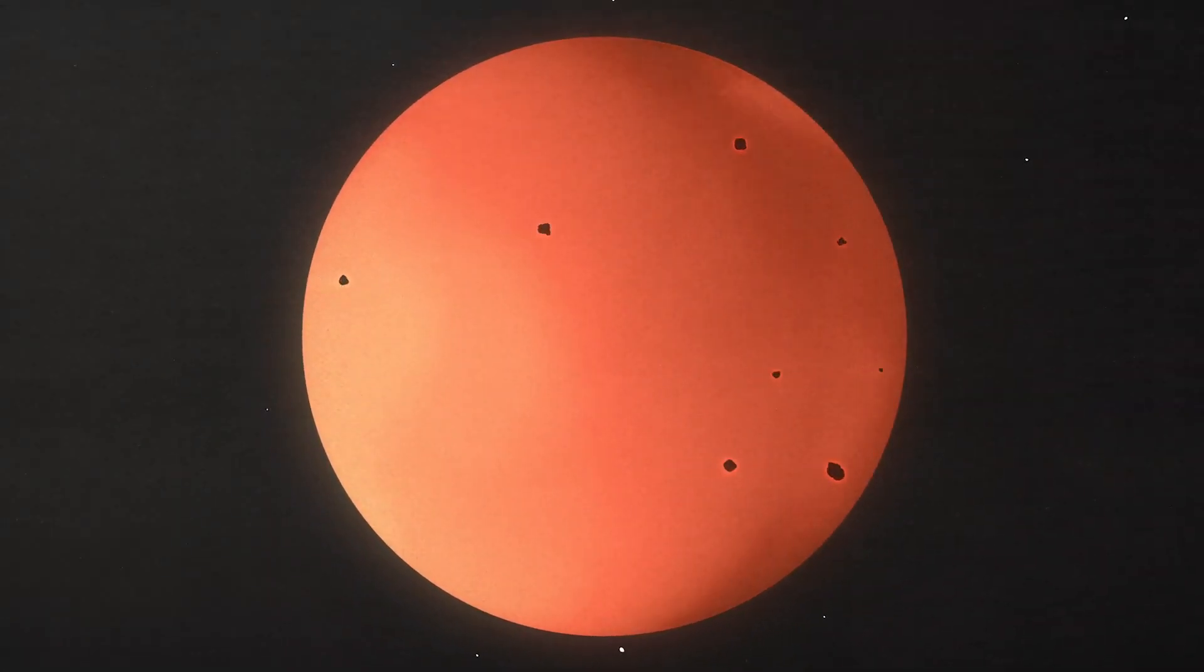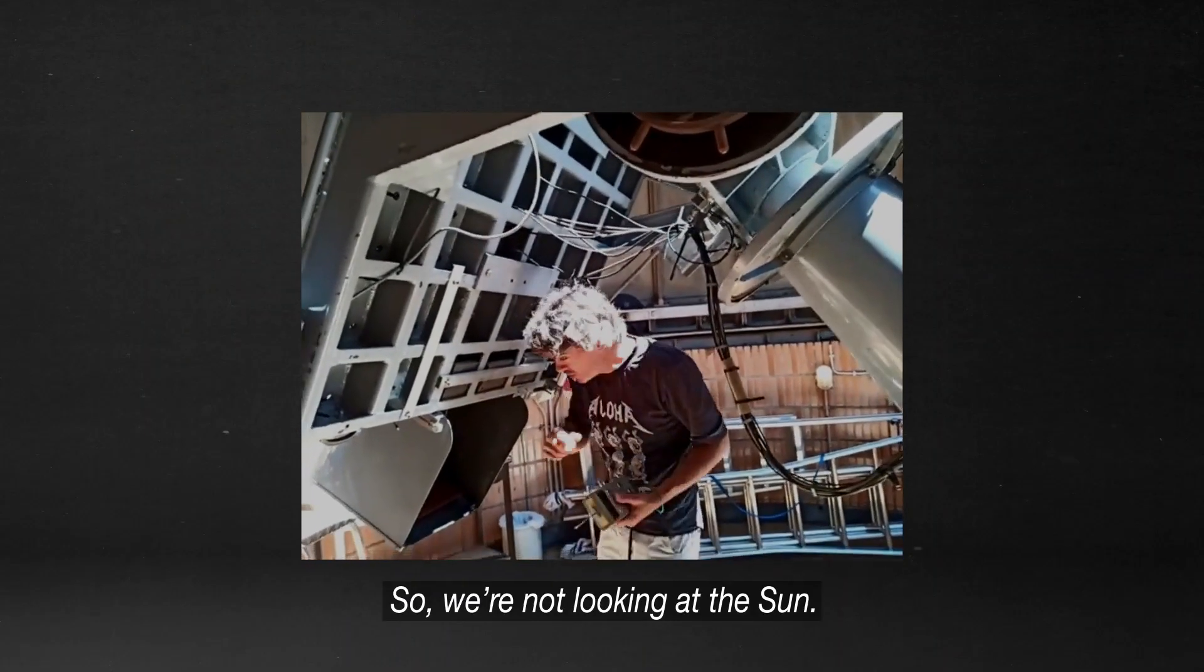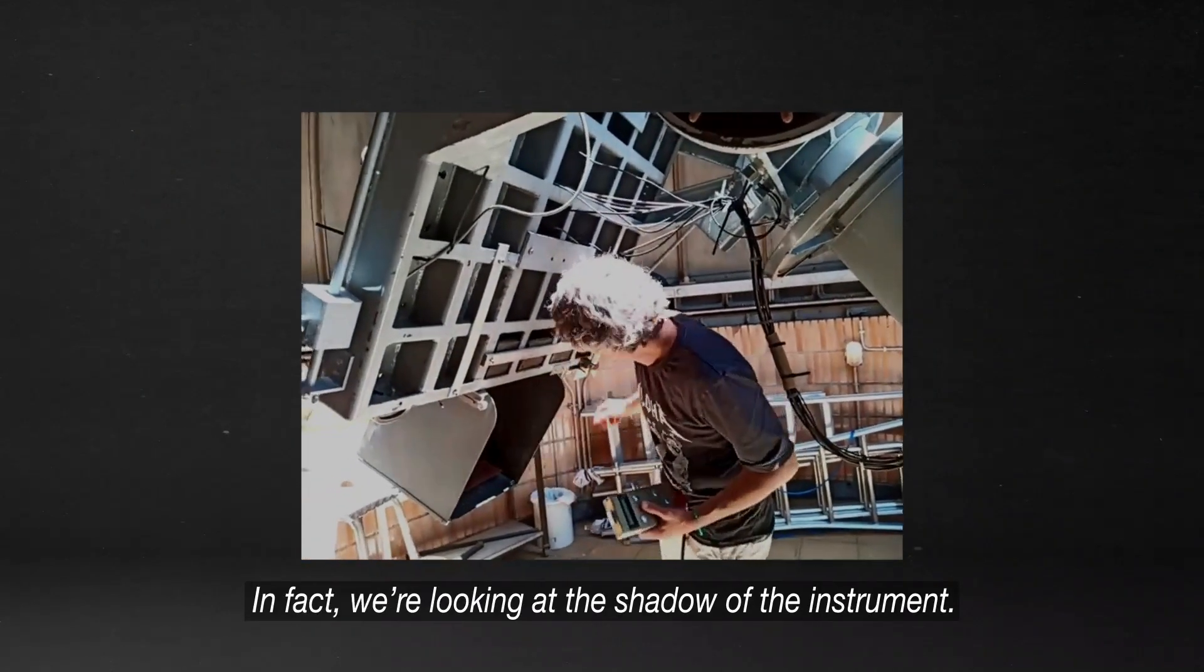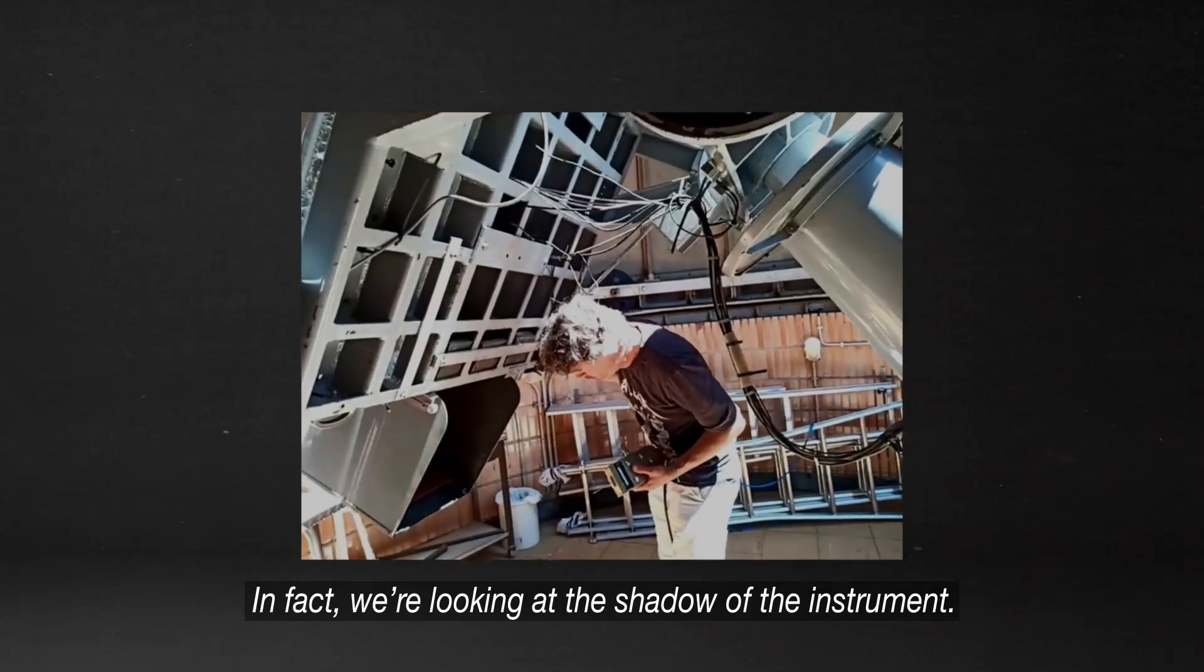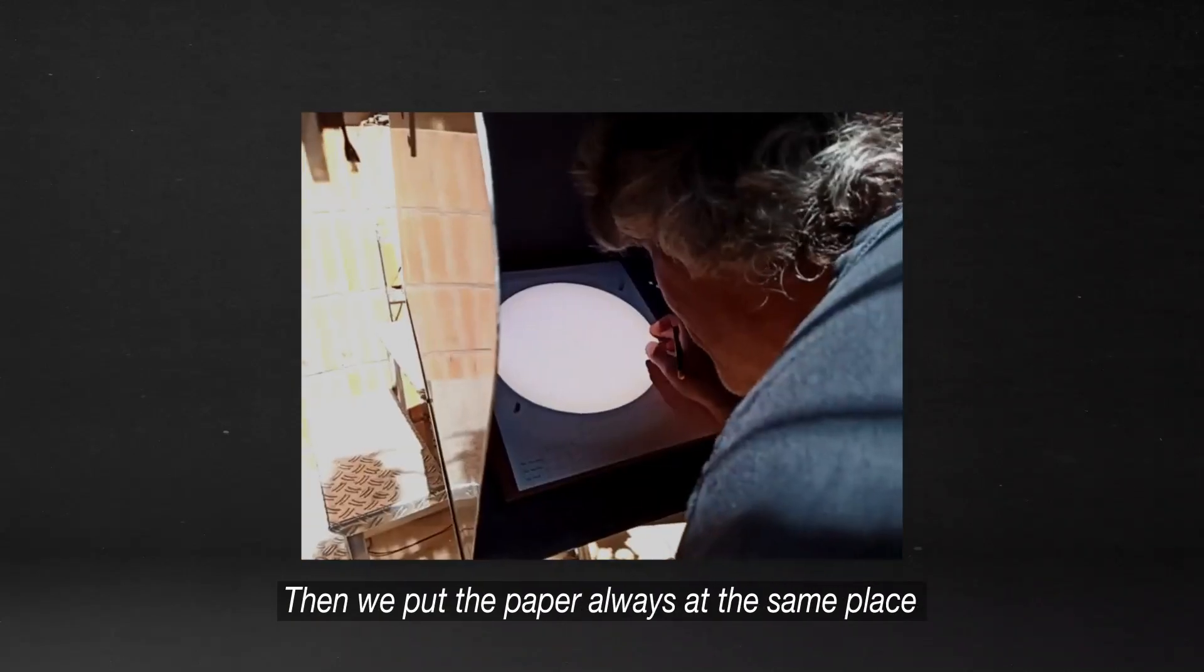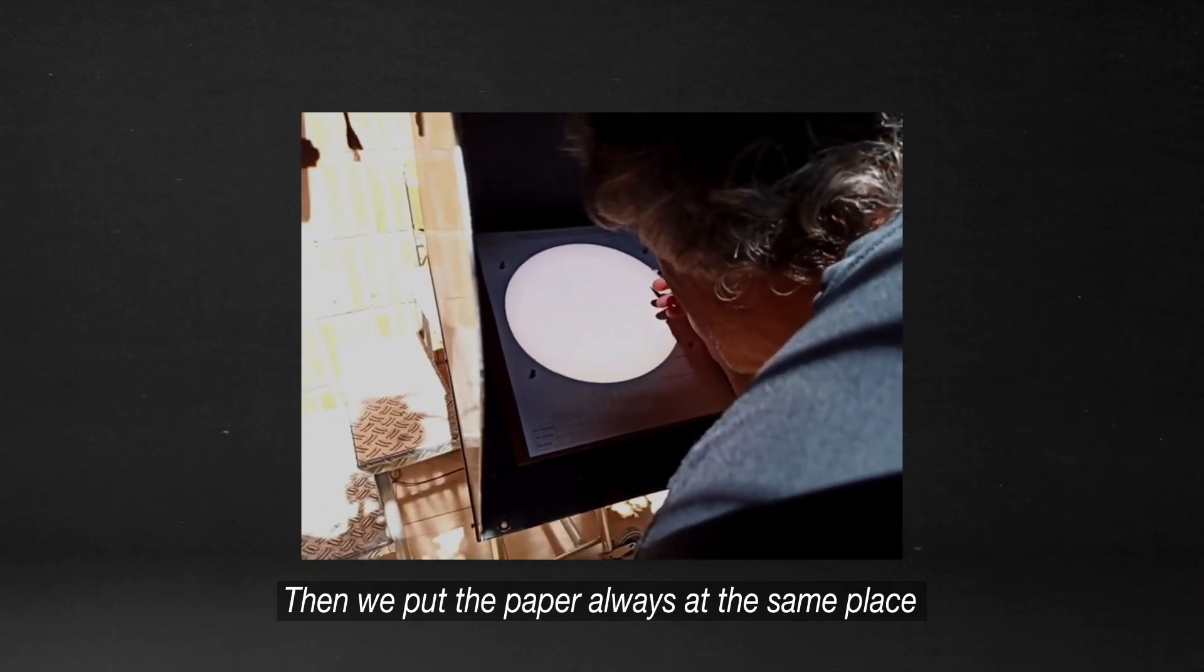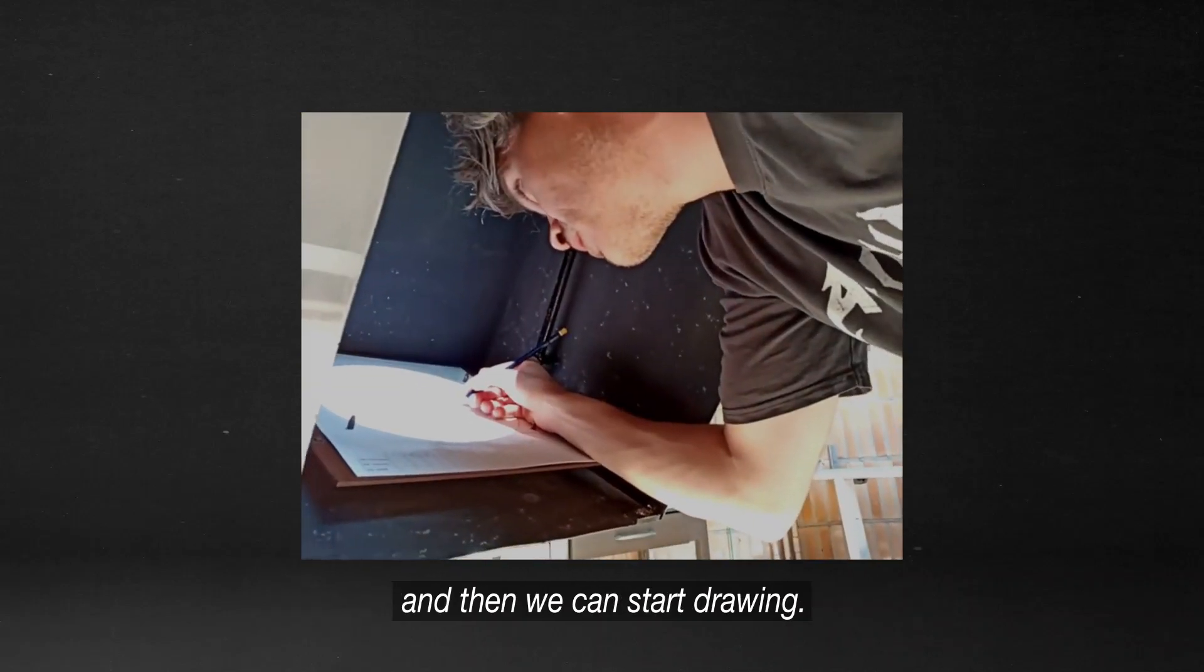They appear and disappear on the sun's surface. So we're not looking at the sun. In fact, we're looking at the shadows of the instrument. Then we put the paper always at the same place, and then we can start drawing.